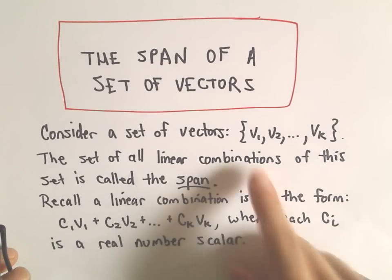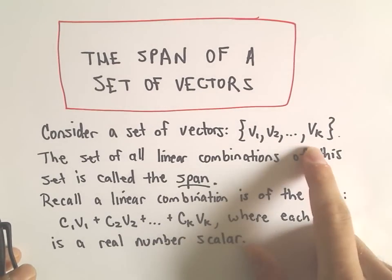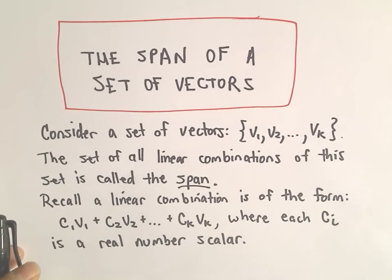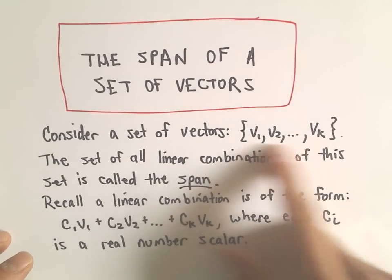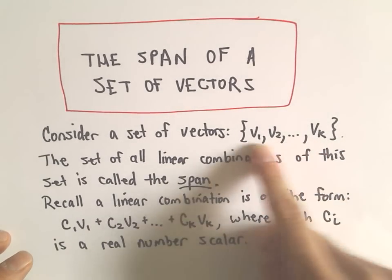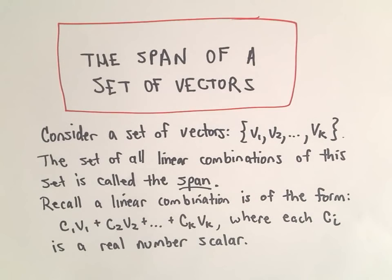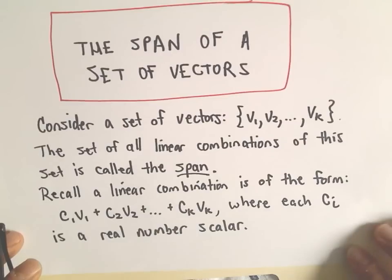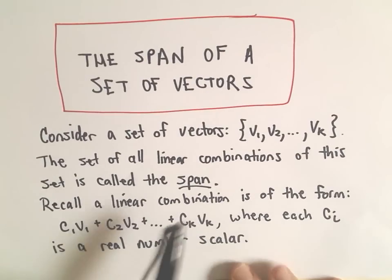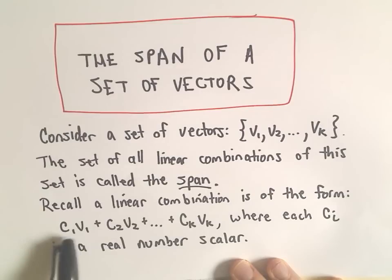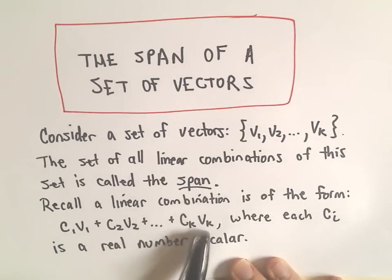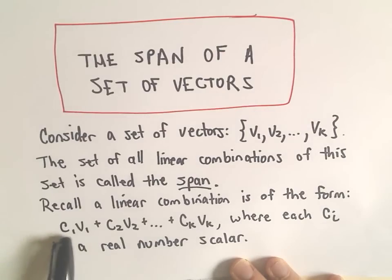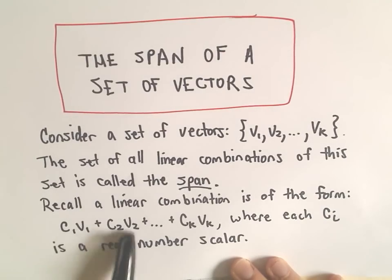The way I think about it is, we've got some set of vectors, and we're basically just multiplying those by scalars and then adding them together. These are kind of the building blocks that you're starting with, and you're thinking: how can I take these vectors and create new vectors? A linear combination is just c sub 1 times v sub 1 plus c sub 2 times v sub 2, up to c sub k times v sub k, where the c sub i's are just real number scalars.